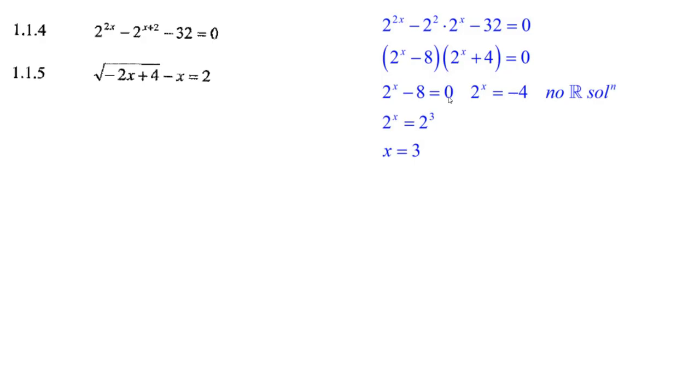So that's it. 2 to the x minus 8 equals 0. 2 to the x equals minus 4—when you subtract, there's no solution to that. You can't get a negative number, so it's just add 8. You get 2 cubed, x must equal 3.